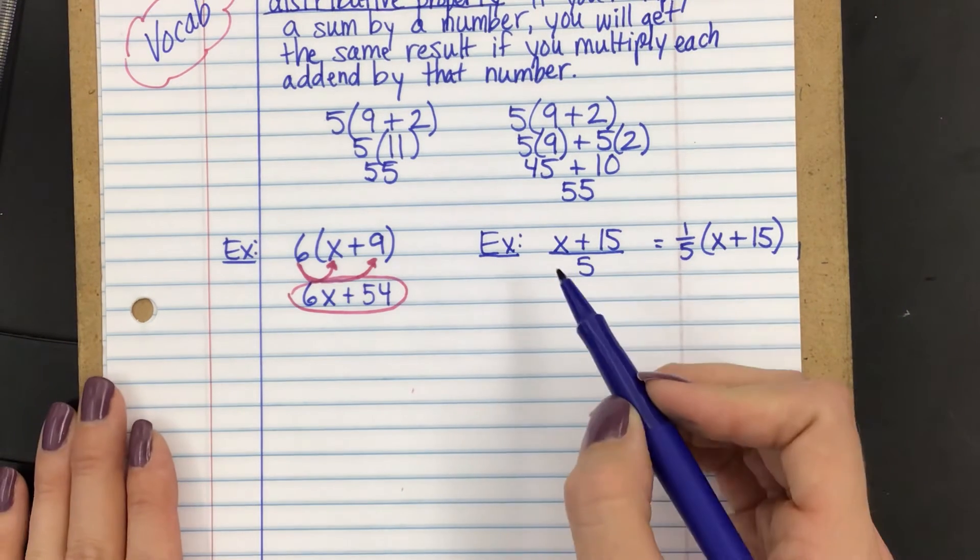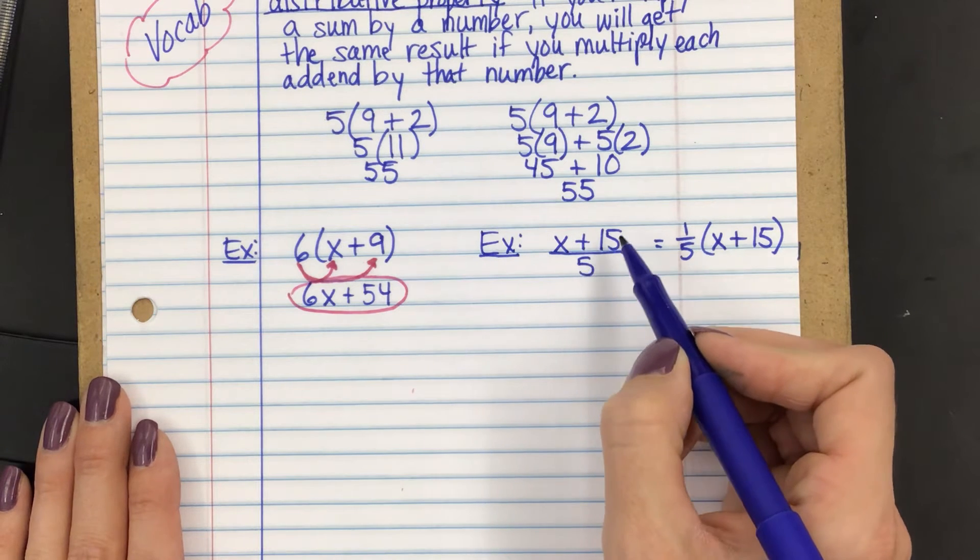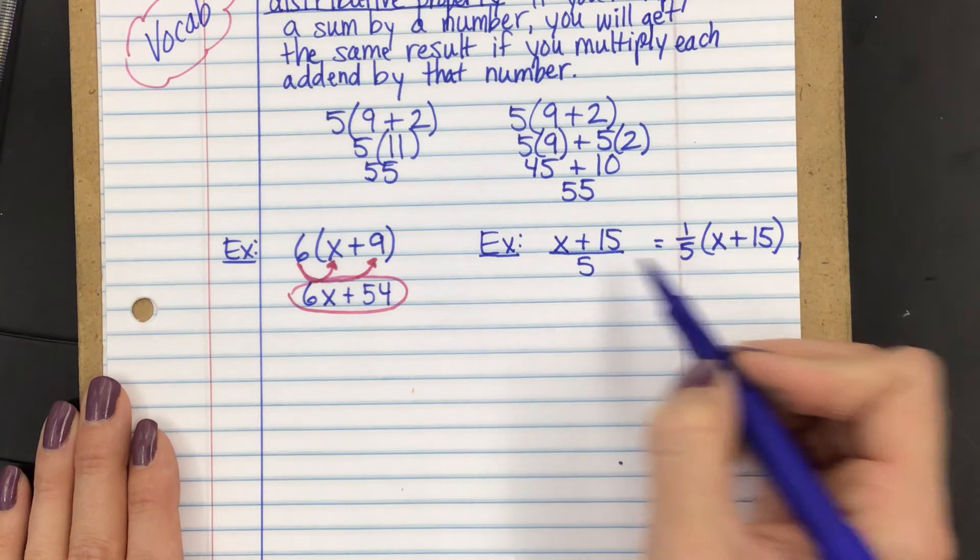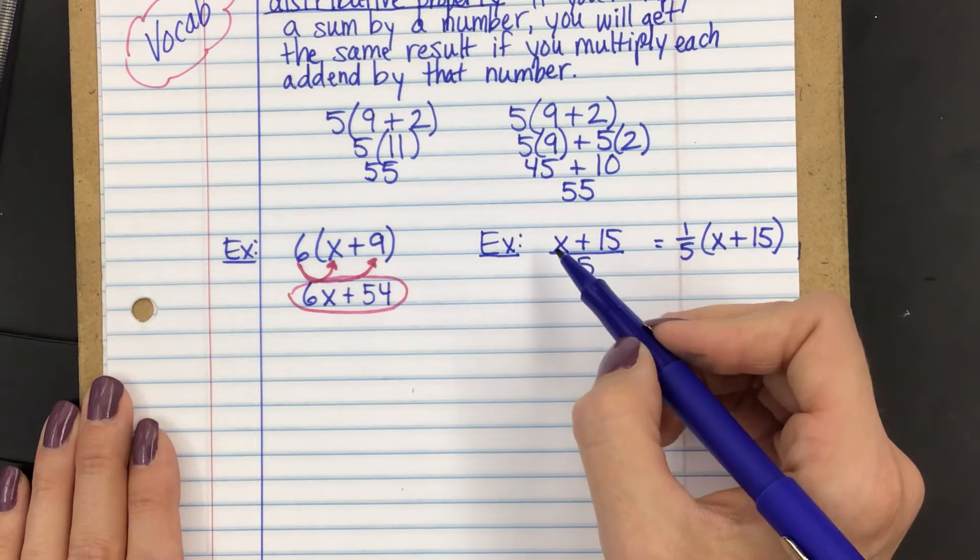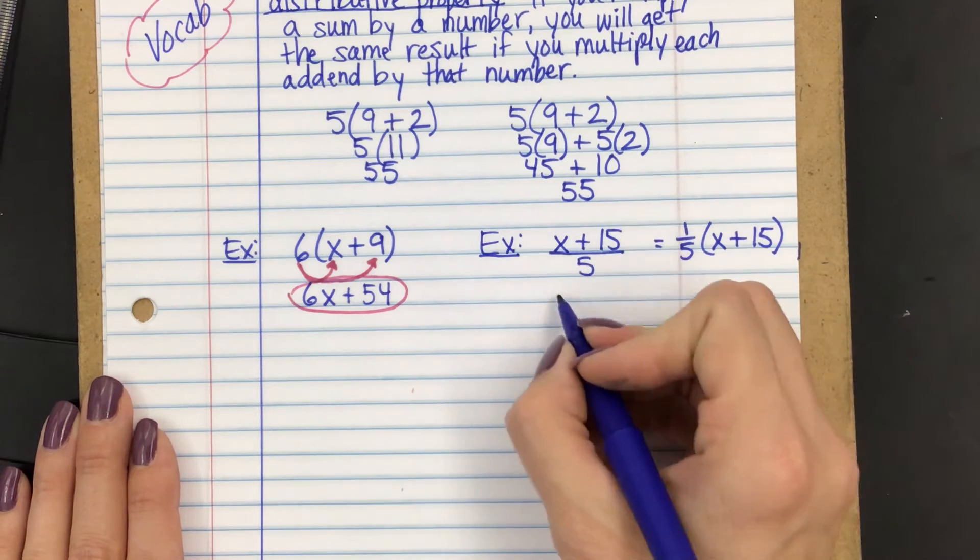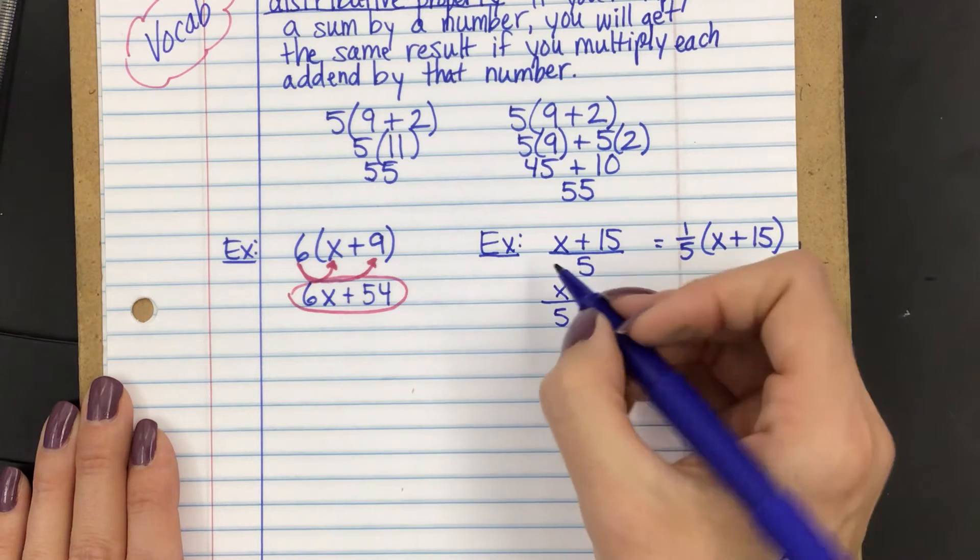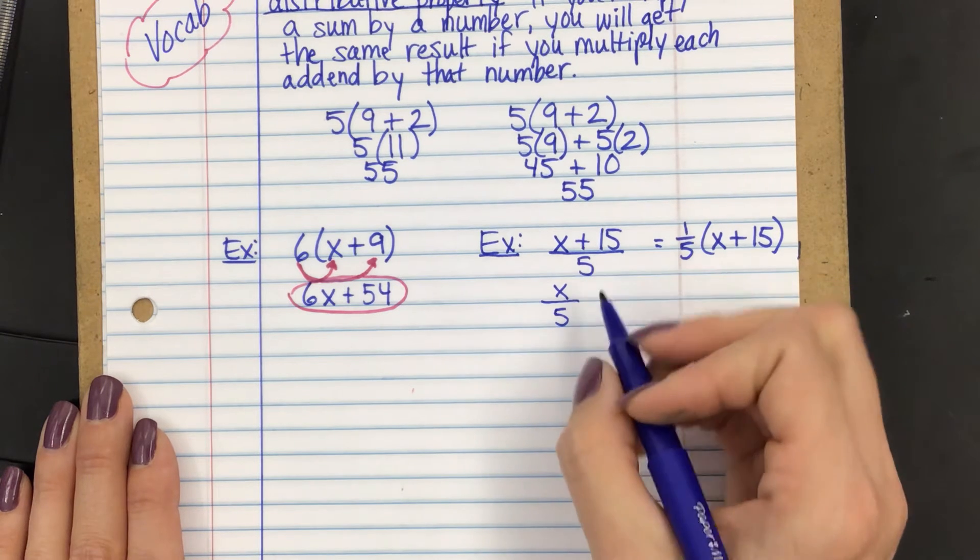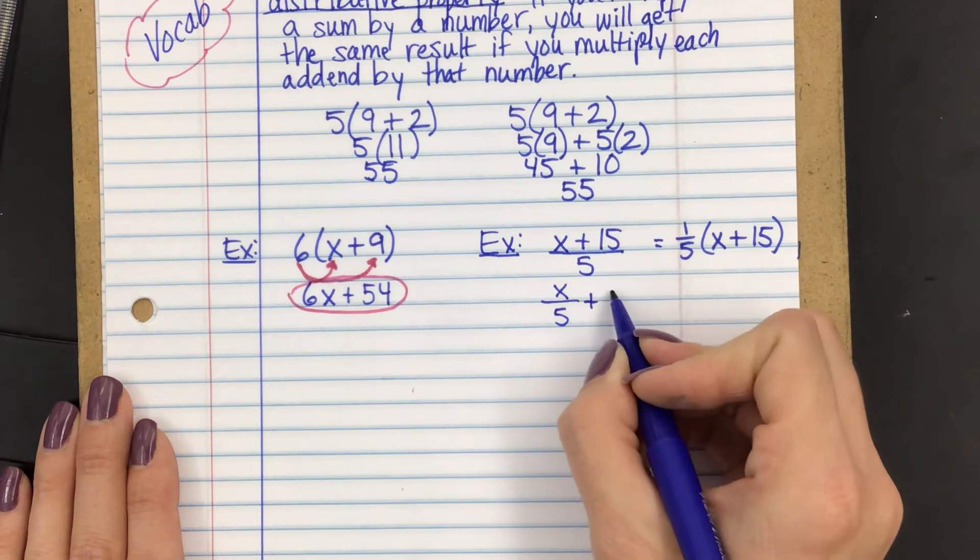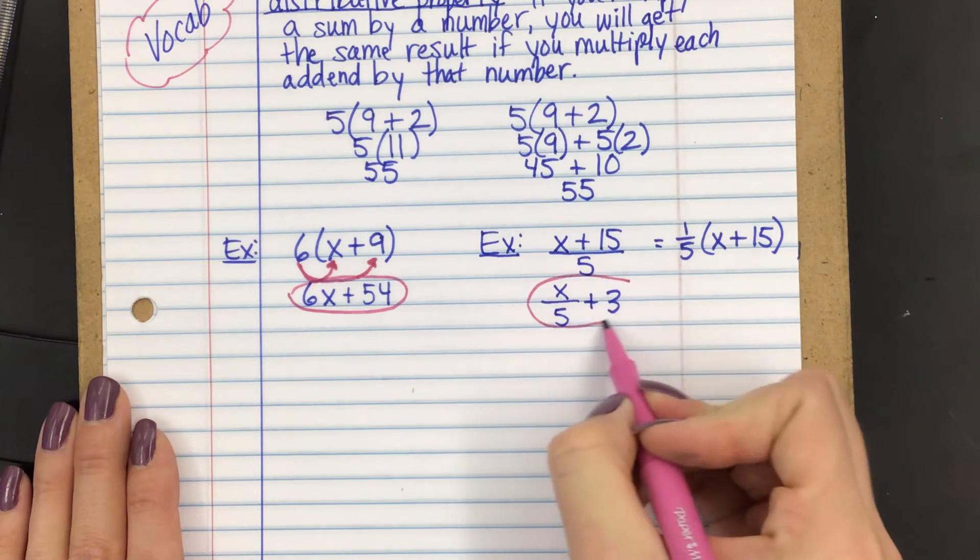What I can do is I can distribute the 5 to the x and to the 15. I don't need to change it into this form. So what that means is I'm going to have x divided by 5, because I distributed it here, and then 15 divided by 5. What's 15 divided by 5? 3. There you have it, my friends.